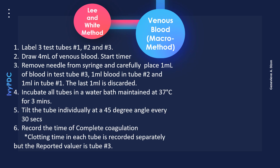For the Lee and White procedure, label test tubes number one, number two, and number three. Draw four ml of whole blood and start the timer. Remove the needle from the syringe and transfer one ml of blood to test tube number three, then one ml to test tube number two, and lastly one ml to test tube number one. The last one ml is discarded together with the syringe.